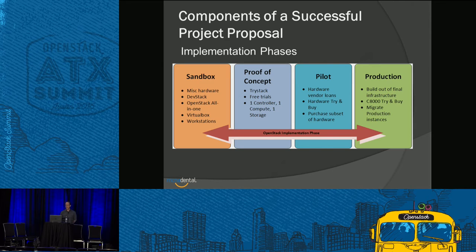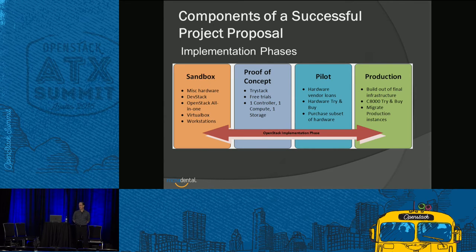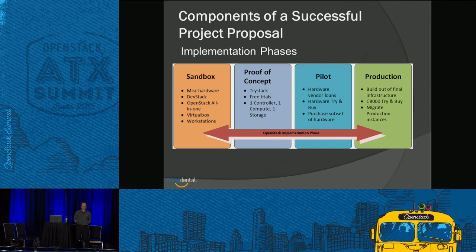In your pilot, a lot of hardware vendors will lend you hardware once you're getting more serious — either at their own facilities, or there are vendors that will do hardware try-and-buys where you purchase the hardware and if you don't like it, you return it. At this level you should purchase a subset of the hardware you're going to use for your final production design. Then you move on to your production environment where you'll deploy your final production hardware and start migrating your production instances.